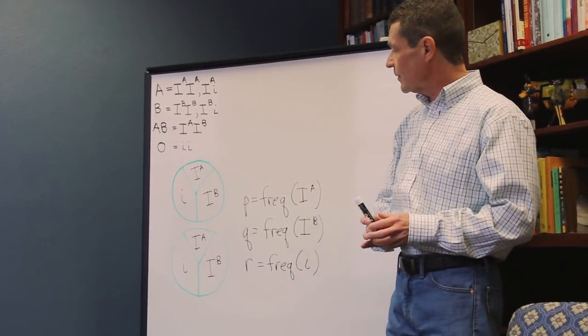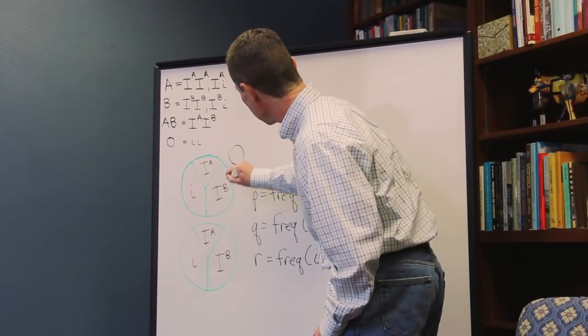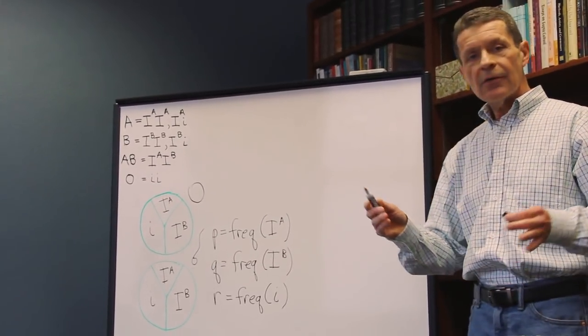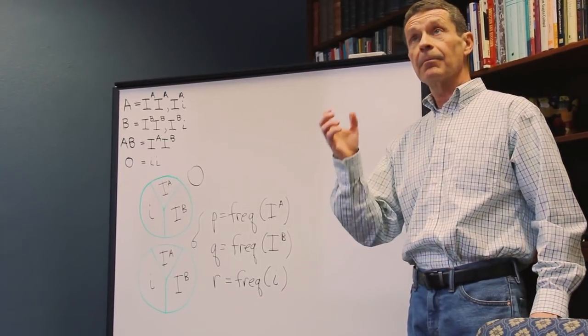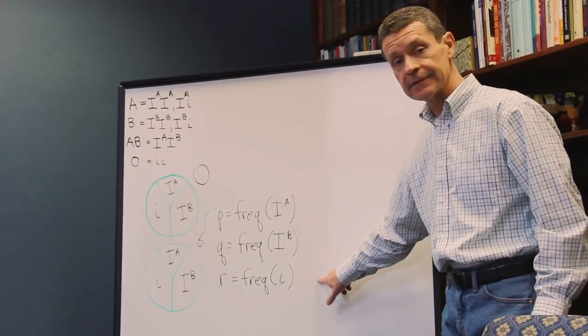And these would represent haploid gamete pools. So, this could represent the egg pool, and this could represent the sperm pool. So, now we just follow the exact same rules of Hardy-Weinberg to figure out the blood type frequencies from the allele frequencies.